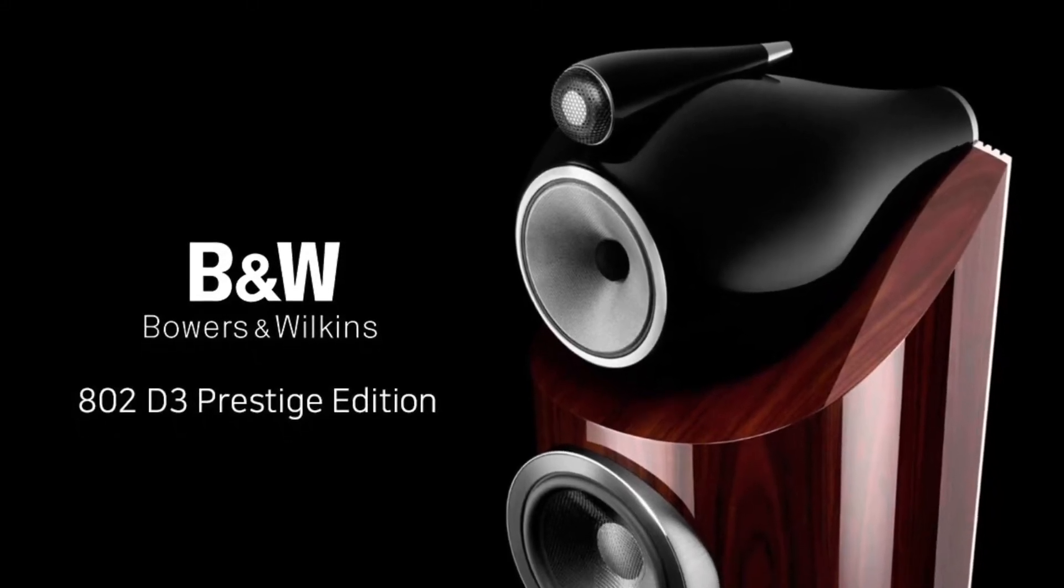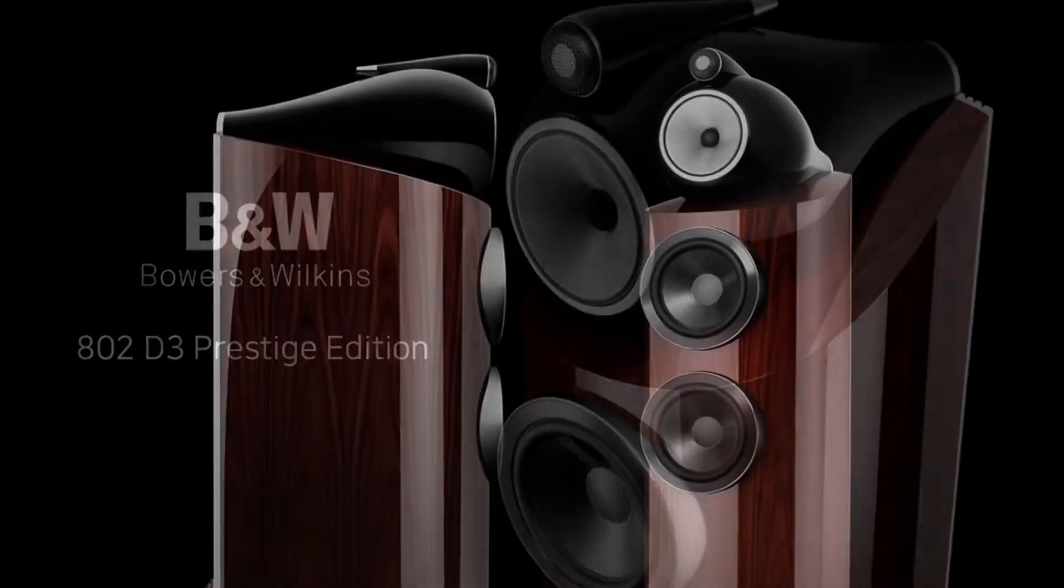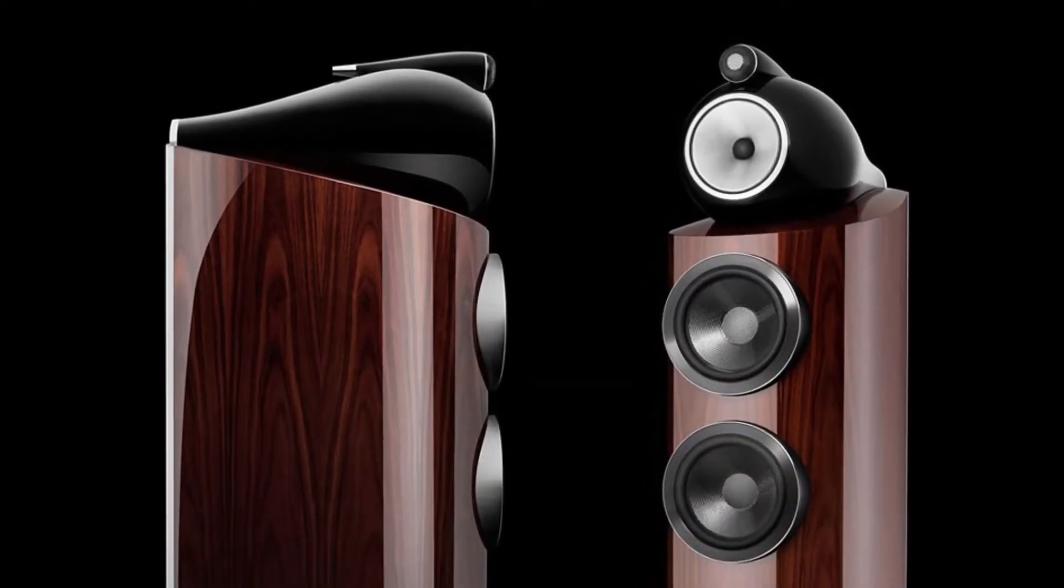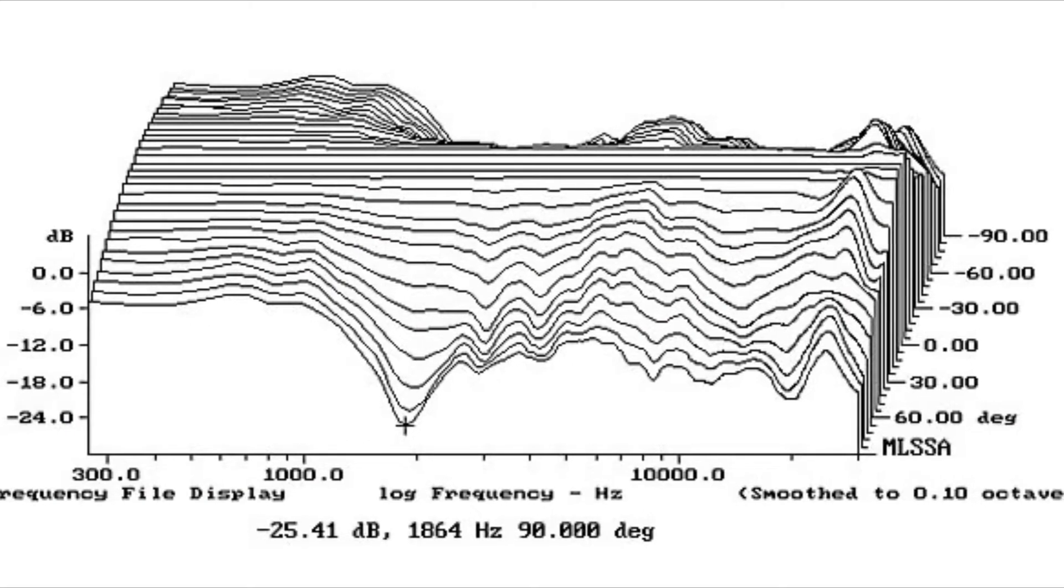In last episode, we discussed how to read the speaker's off-axis response measurement result. Now let's take a look at how it is measured, such as this B&W 800 D3 horizontal plot, and what this might affect the sound in your listening room.